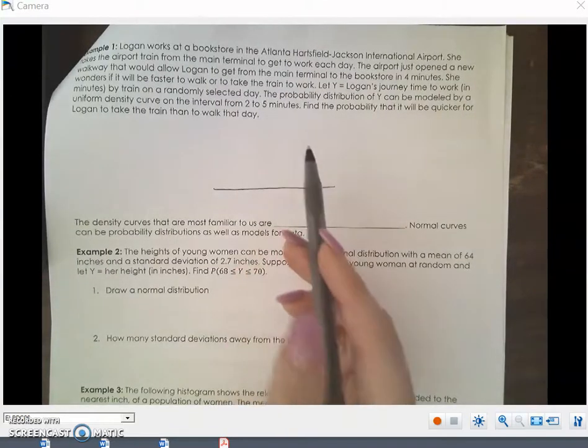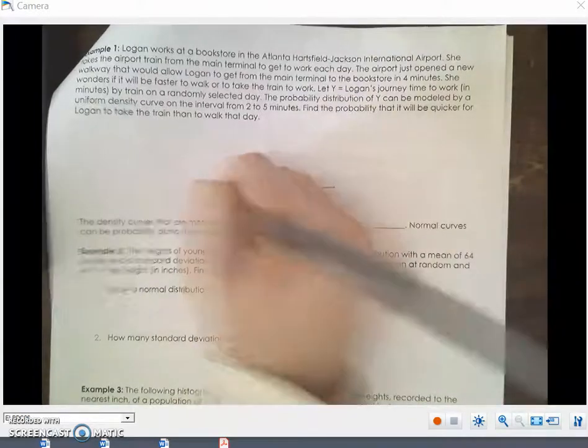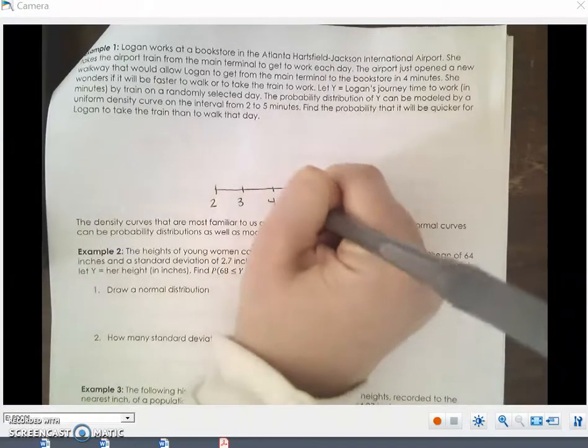Let Y equals Logan's journey time to work in minutes by train on a randomly selected day. The probability distribution of Y can be modeled by a uniform density curve on the interval from 2 to 5 minutes. Find the probability that it will be quicker for Logan to take the train than to walk that day. So we have a density curve. We need to go from 2 to 5 minutes. So we'll start at 2, 3, 4, 5.